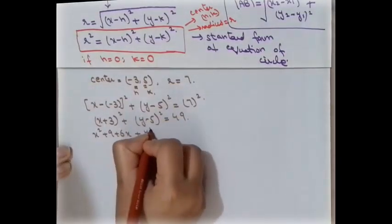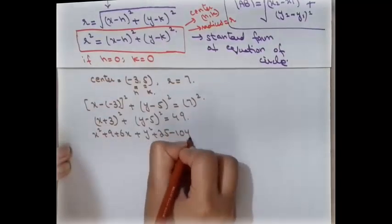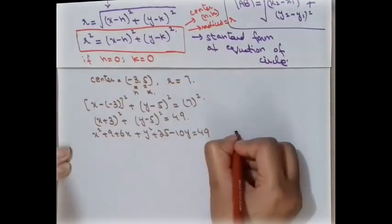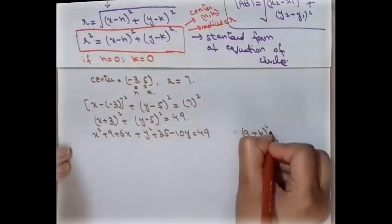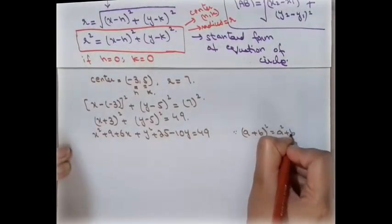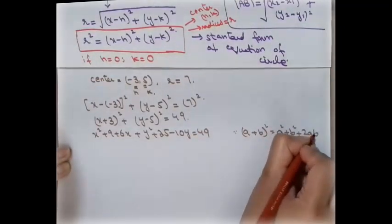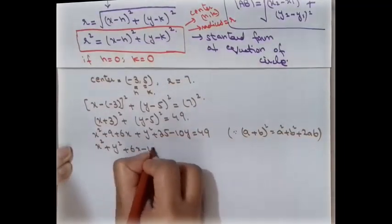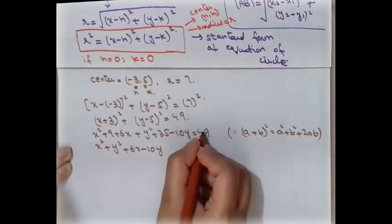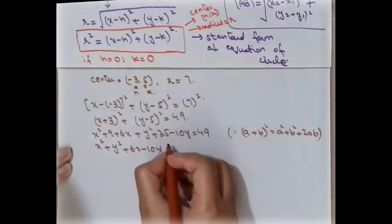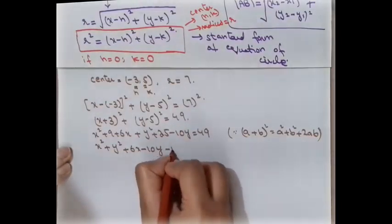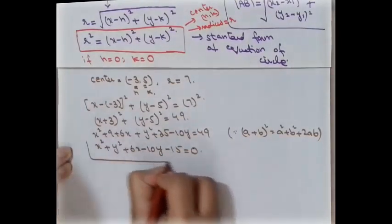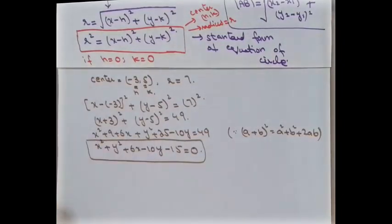Applying the expansion formula (a + b)² = a² + 2ab + b², we get x² + y² + 6x − 10y + 9 + 25 − 49 = 0, which simplifies to x² + y² + 6x − 10y − 15 = 0. We now have the equation of this circle.